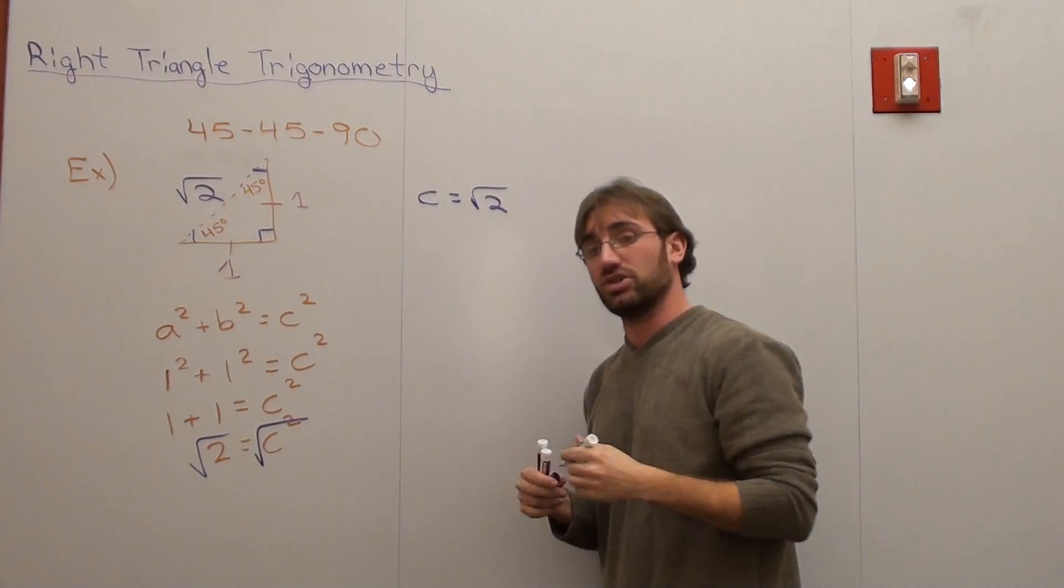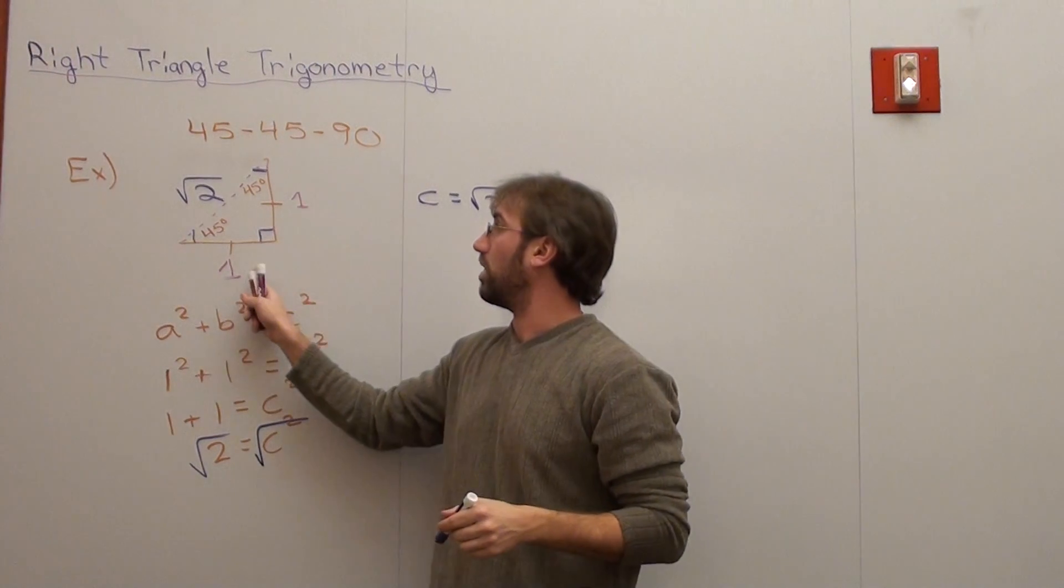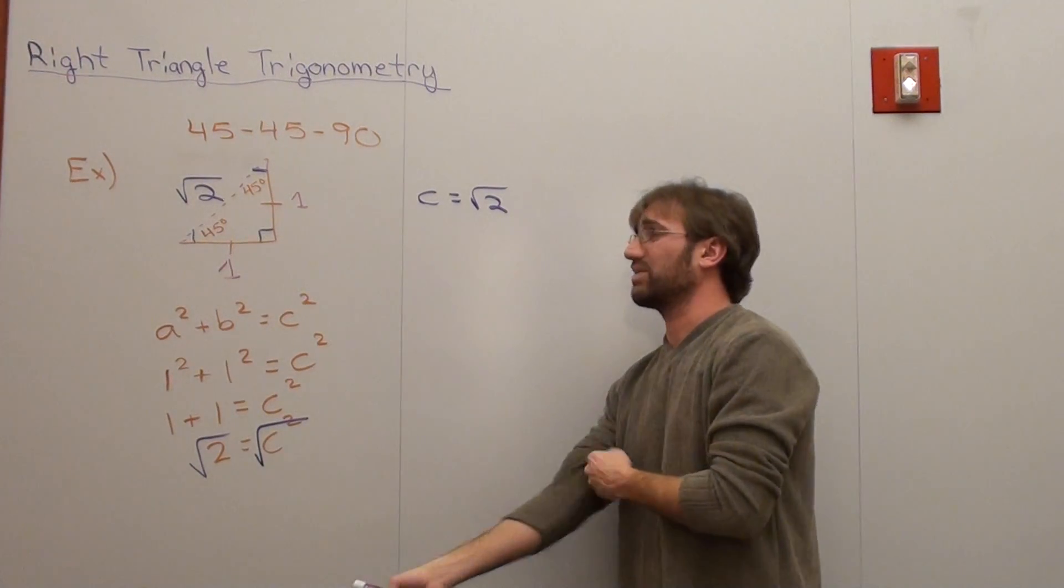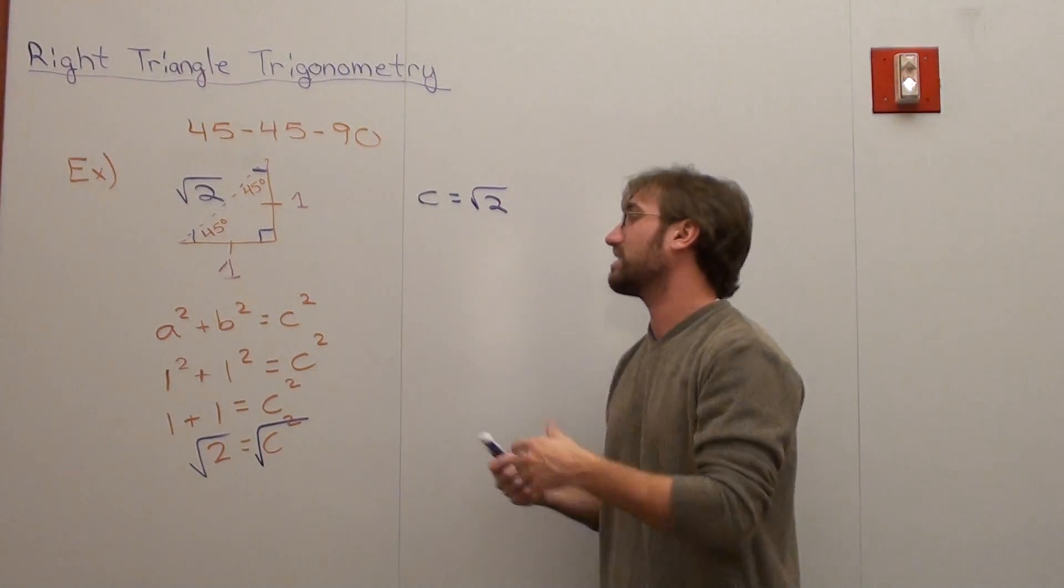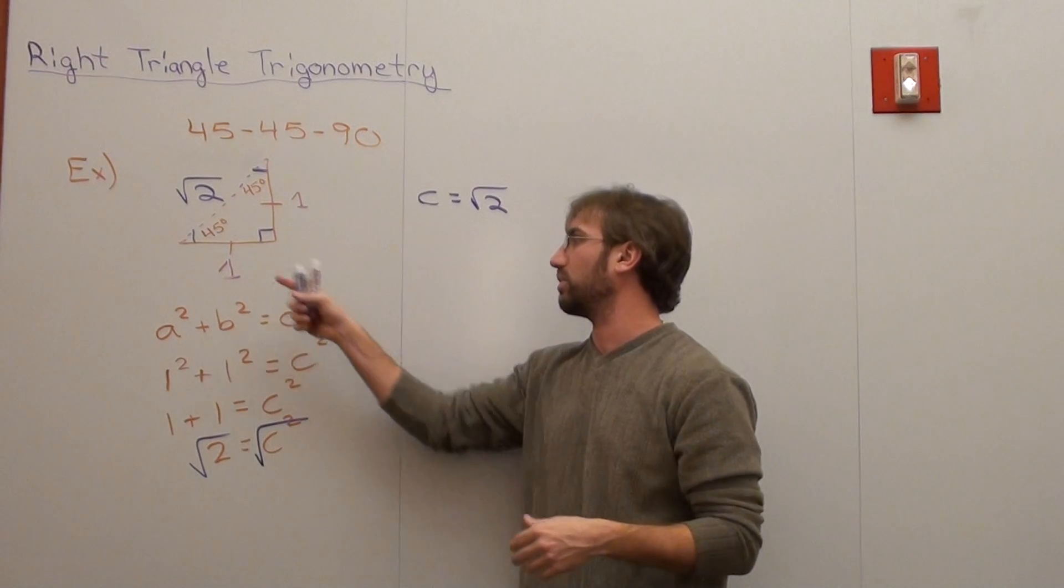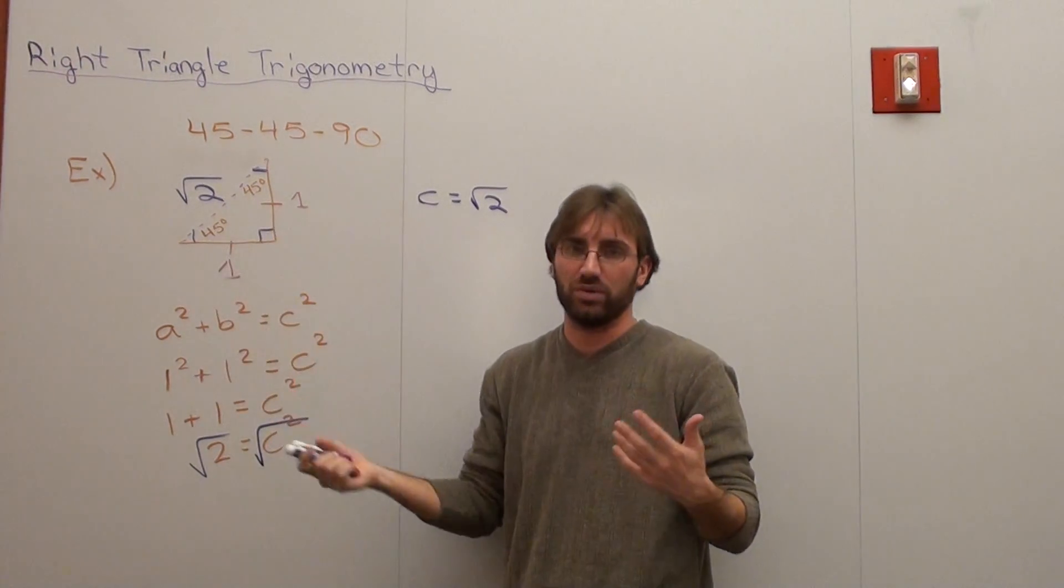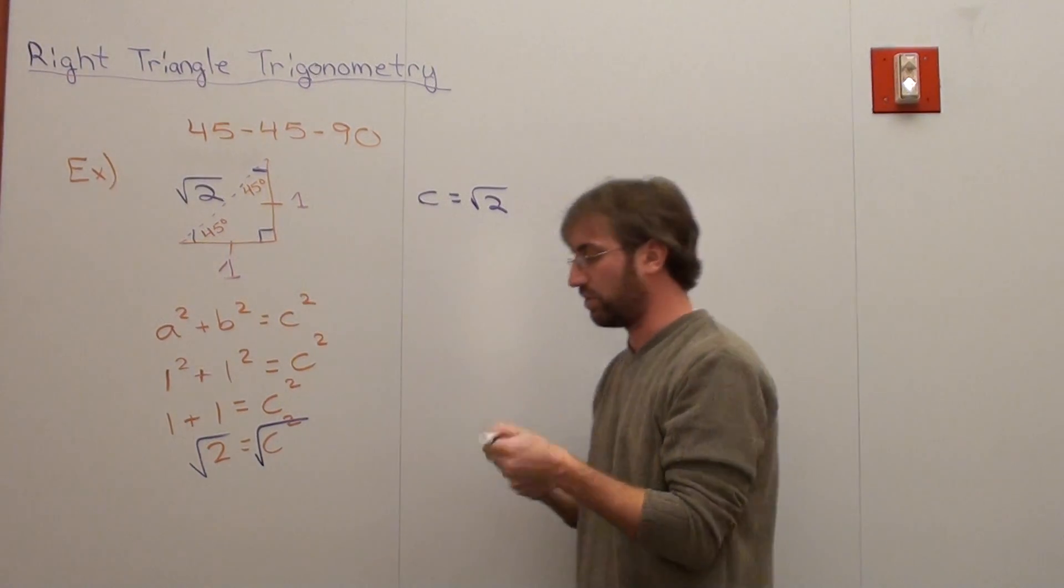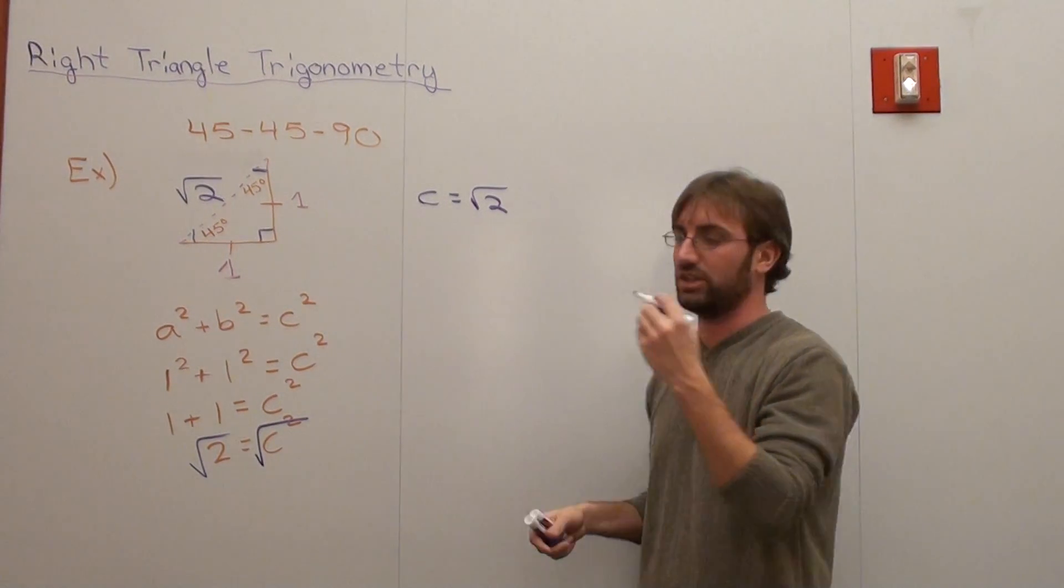So on a 45-45-90 triangle, both legs are equal to 1 and the longest side is the square root of 2. Now what's really interesting is if we use this in the general case, it doesn't really always work that way because not every triangle that's 45-45-90 will have 1-1 square root 2. What it'll have instead is this, and we have to use it for all types of cases.